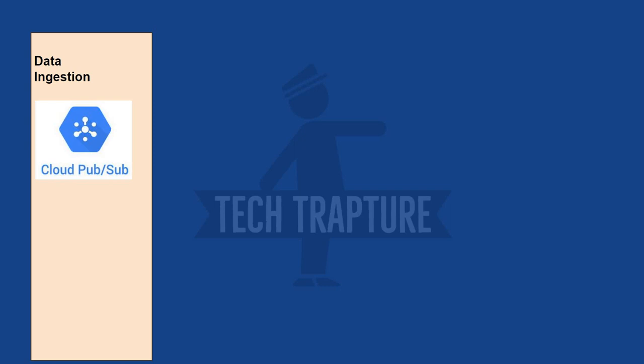If you have object-type data — audio files, media files, CSV files, JSON files, or any kind of object — you first need to put those files into Google Cloud Storage. We use Google Cloud Storage for storing raw data. There can also be applications producing data that needs to be transformed into different formats and then loaded into a data warehouse or other components. For example, App Engine can create data internally.